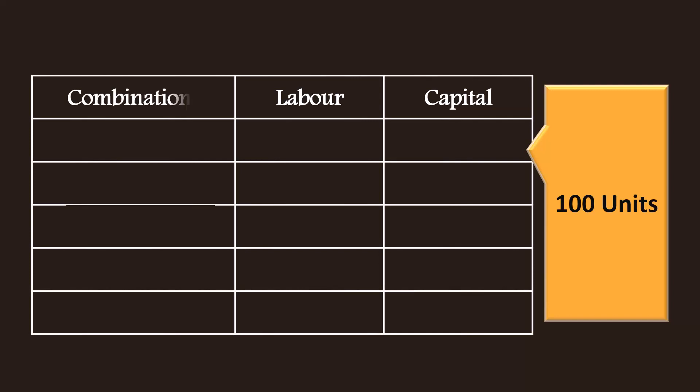He tabulates a few combinations. They are A, B, C, D and E. Combination A contains 1 unit of labor and 12 units of capital. 2 units of labor and 8 units of capital are there in combination B.